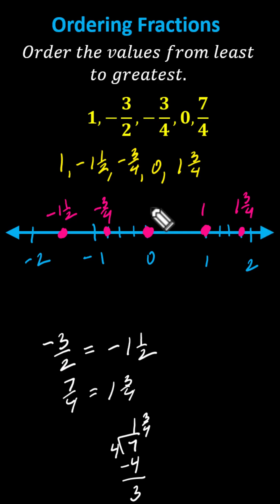I forgot to label 0 here. Now the values are in order from least to greatest, but we want to give them back in the original form. So the final answer is negative 3 halves, negative 3 fourths,